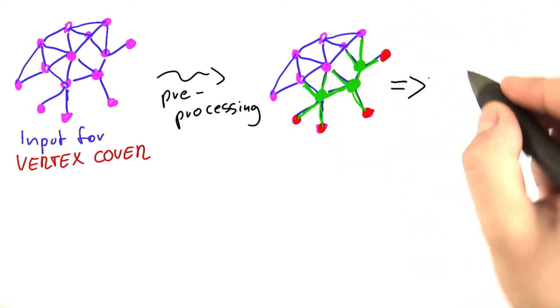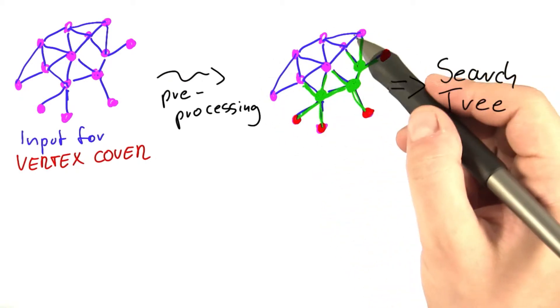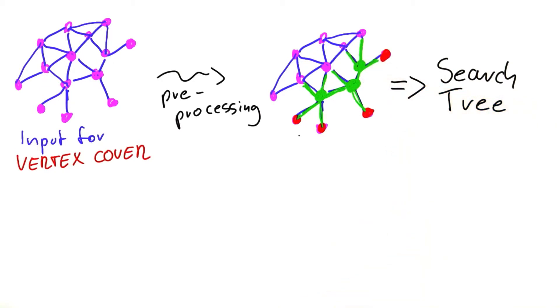But the main point is that we now put this into a search tree to find the best possible vertex cover for those vertices where we have not yet found an assignment. And my point is this.